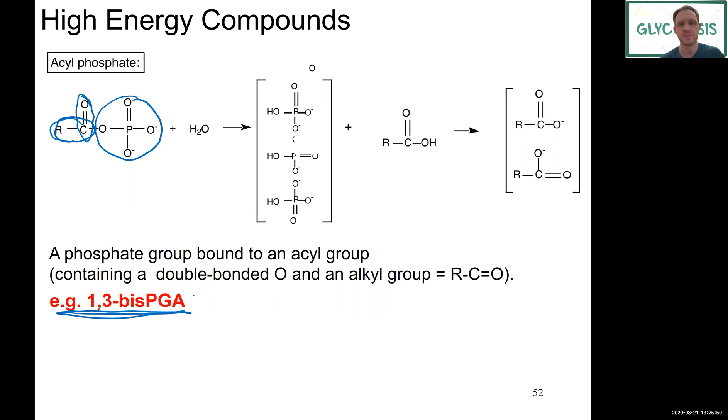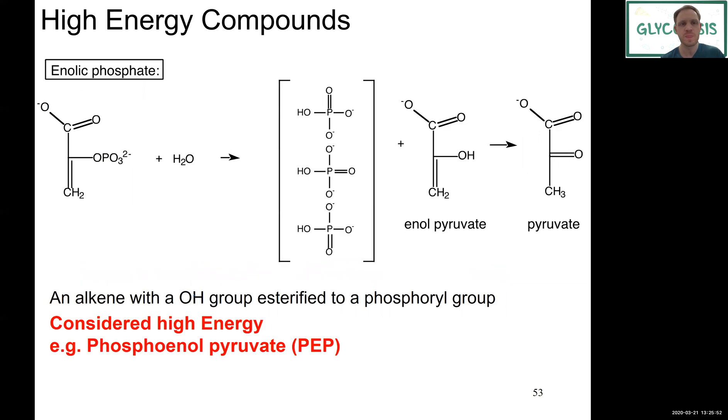Next one up: enolic phosphates. These we will also see as high energy compounds in glycolysis. What's an enolic phosphate? We have to look at what an enol is. An enol would be an alkene function, such as here, that has an OH group.